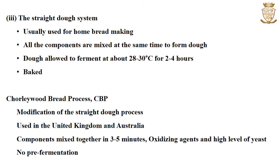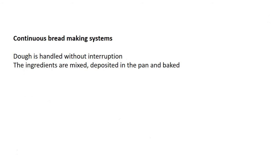The Chorley Wood Bread Process or CBP is a modification of the straight dough process and is generally used in the UK and Australia. Here, all the components are mixed together in 3 to 5 minutes, oxidizing agents and a high level of yeast are added, and there is no pre-fermentation during this process. In continuous bread making systems, the dough is handled without interruption — the ingredients are mixed, allowed to ferment, deposited in the pan and baked in a continuous manner.